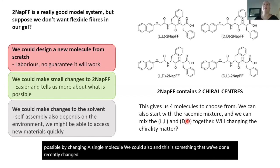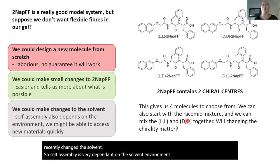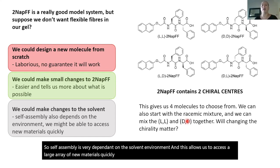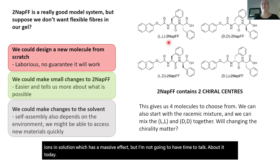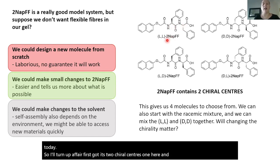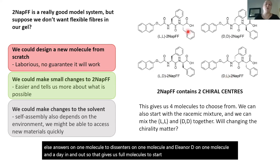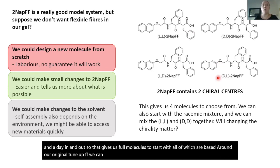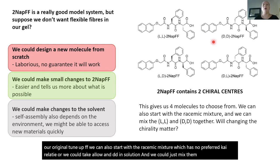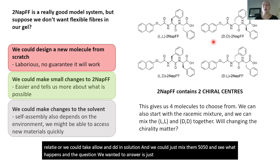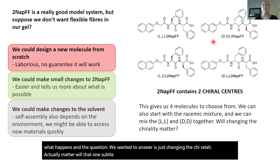We've got two chiral centers in 2NapFF. The 2NapFF I've talked about in all the previous work is the LL form, but we can also have the DD, the LD, and the DL. We can also start with a racemic mixture which has no preferred chirality, or we could take LL and DD in solution and mix them 50:50 to see what happens. The question we wanted to answer is: does changing the chirality actually matter? Will that one subtle flip of part of the molecule make any difference to the structure we get? We went through a similar process — looking in solution first using neutron scattering — and it was really clear that the samples were really really different.